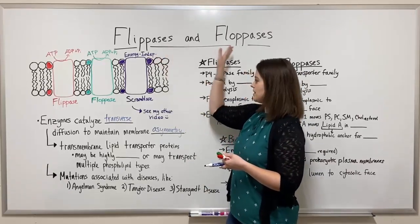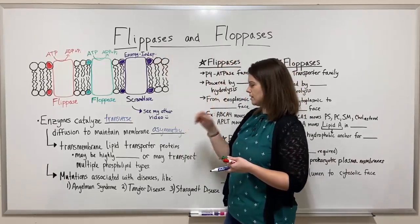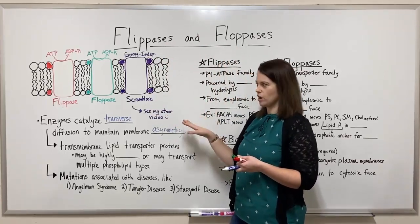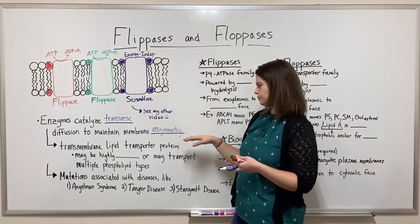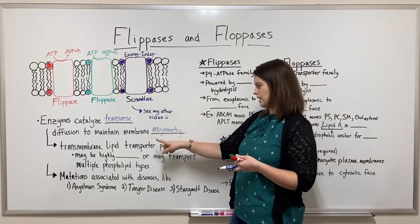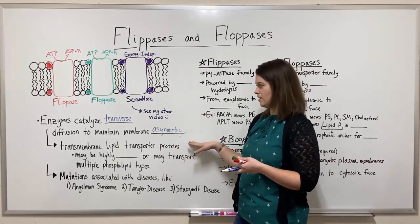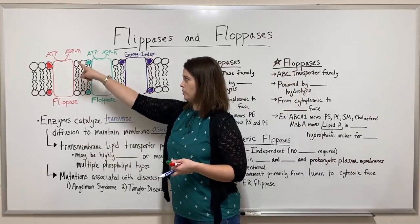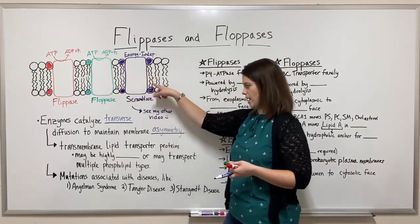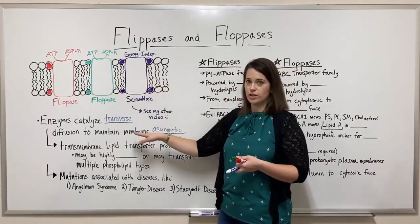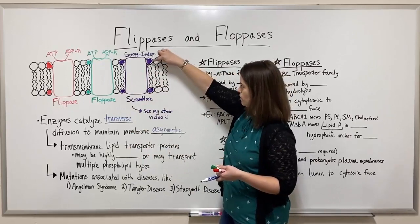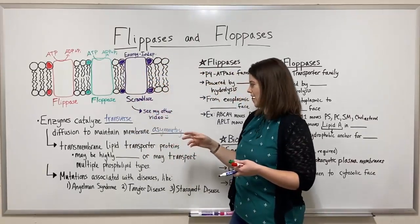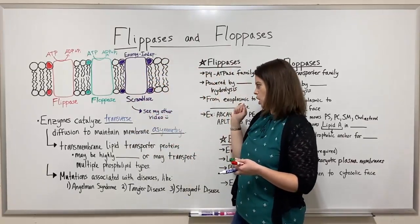These enzymes — flipases, flopases, and also scramblases — are transmembrane lipid transporter proteins. They are transmembrane proteins that span a membrane, and what do they do? They transport lipids from one side to another, depending on what type they are.